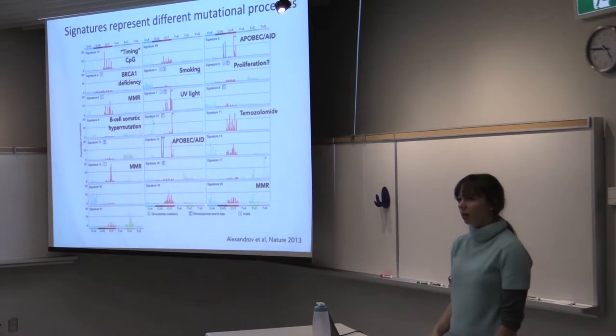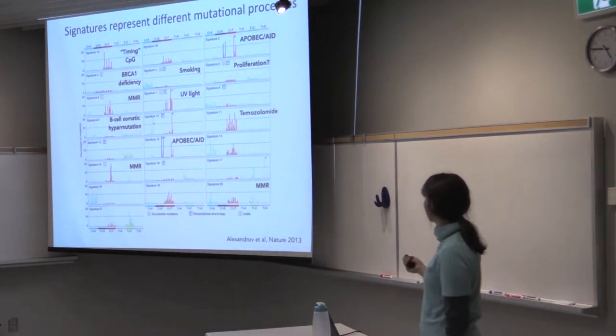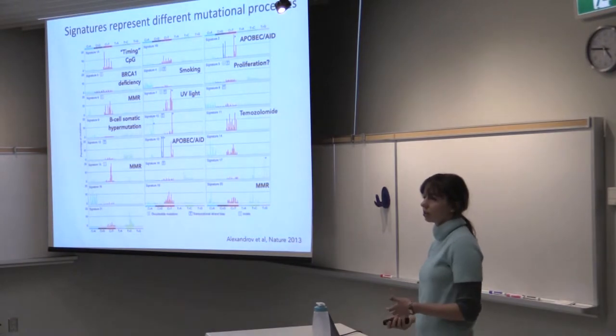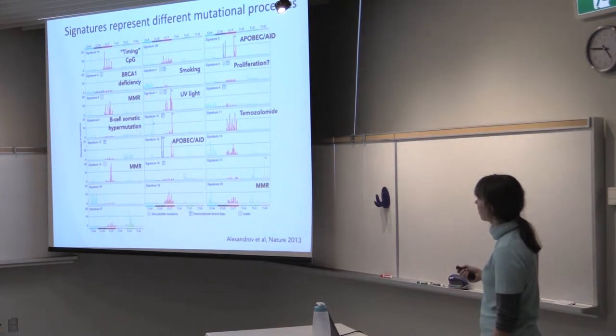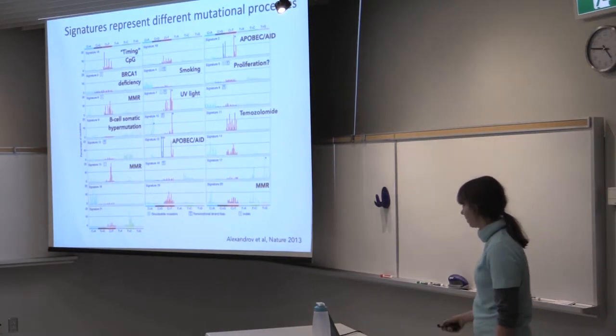In the previous study by Alexandrov and colleagues, they have extracted the set of 30 signatures and have connected them to different mutational sources, such as BRCA1 deficiency, MMR, somatic hypermutation, smoking, UV light, and so on.